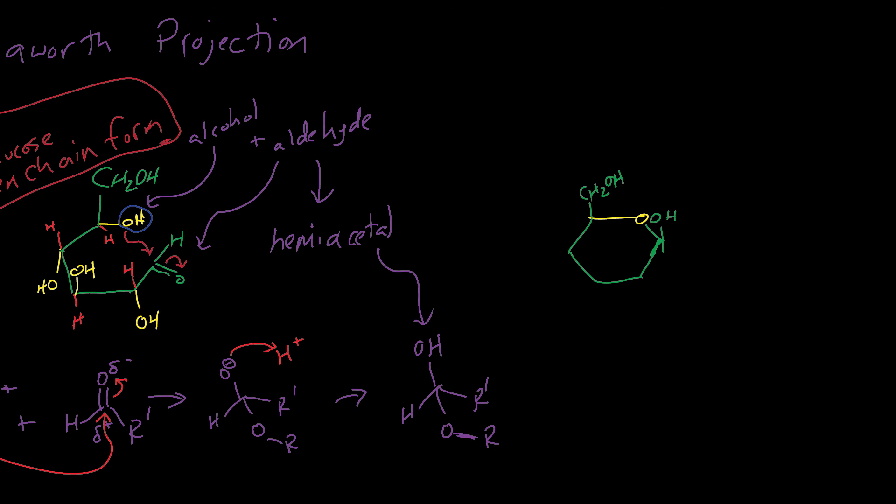So my OH is up or down, and I'll keep that H. I just drew, actually I should to be consistent keep it in green, since that was originally part of the aldehyde. There's a D-glucose - that's the closed chain form.